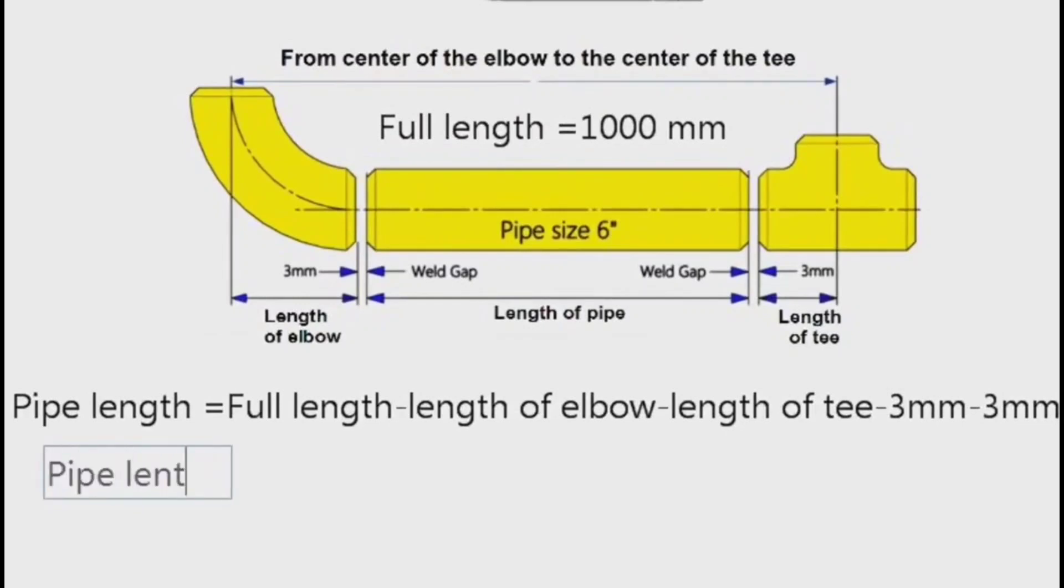If the full pipe section is 1000mm, then the pipe length equals 1000 minus 229 minus 143 minus 3 minus 3.